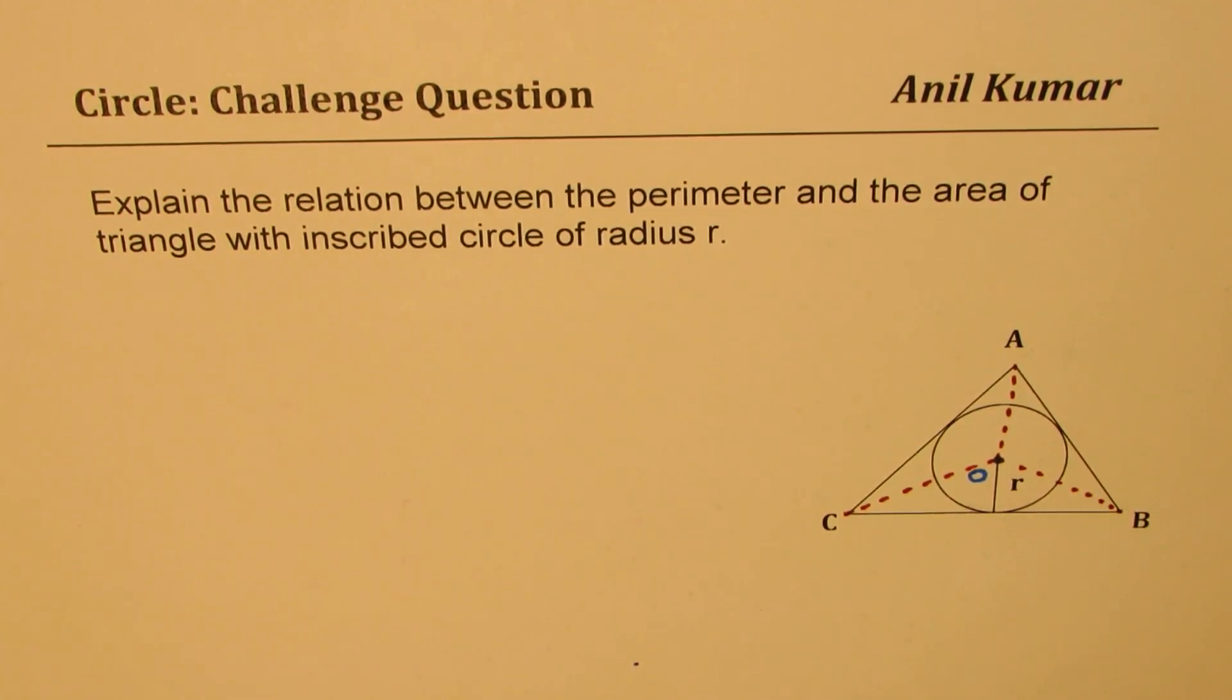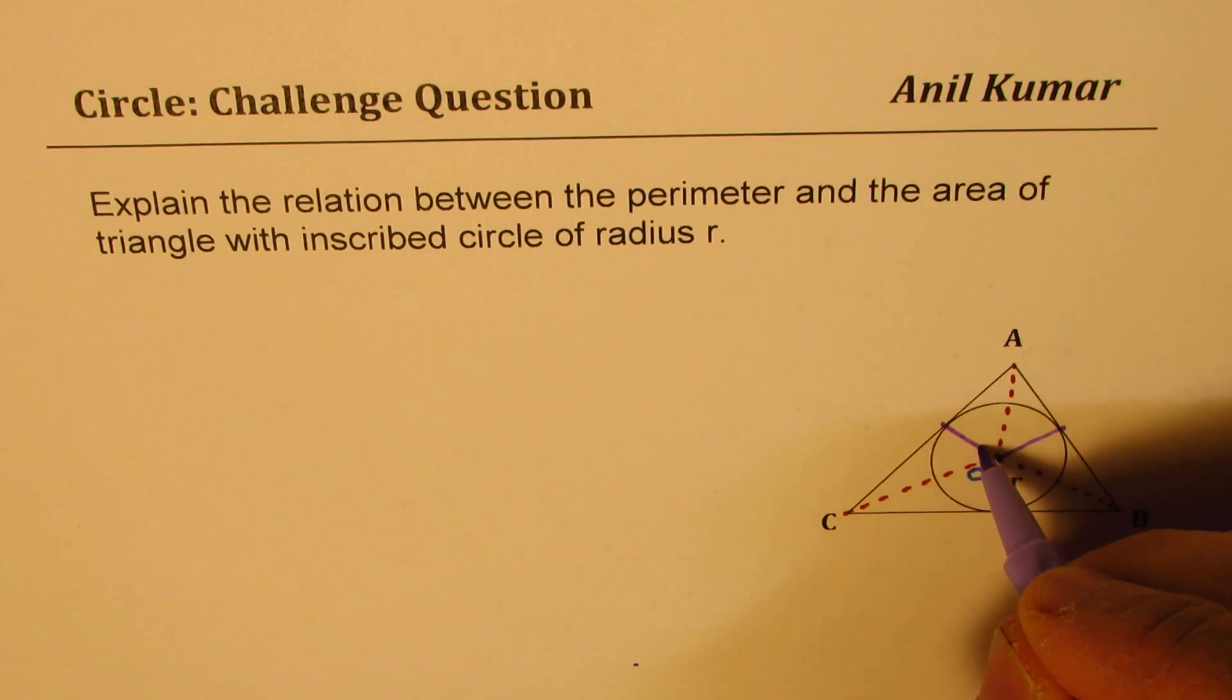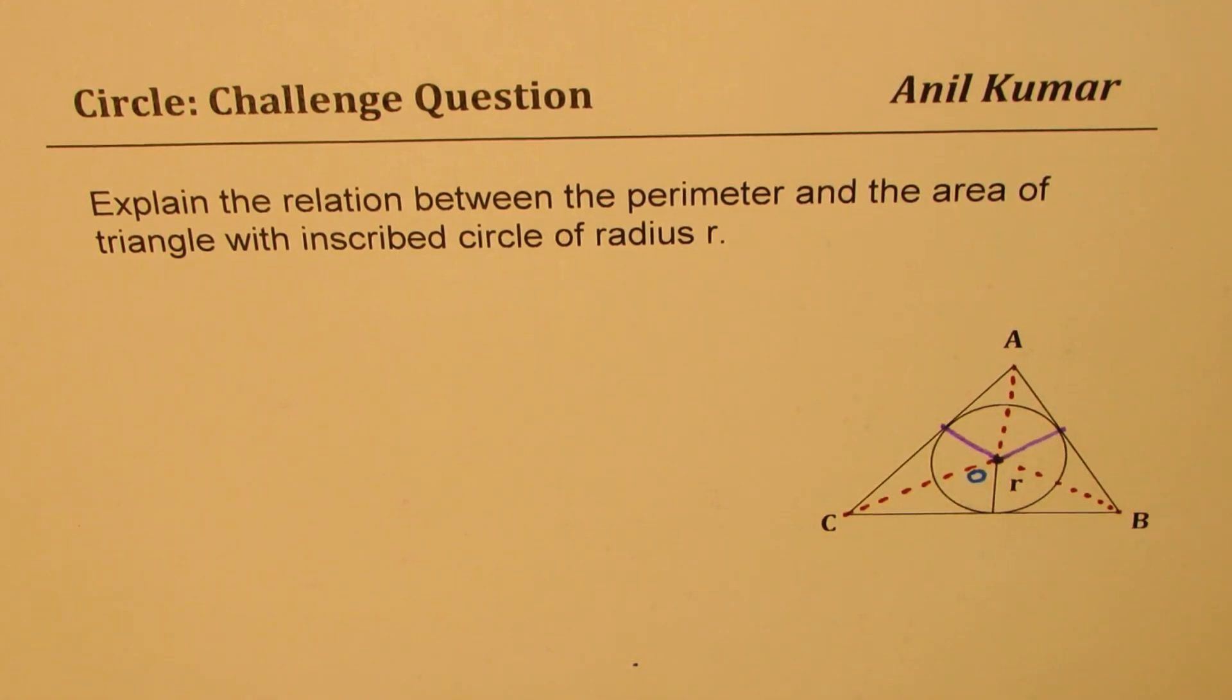Since the circle is inscribed, all these sides are tangent to the circle. So this will be at right angles. So all these points will be at right angles.